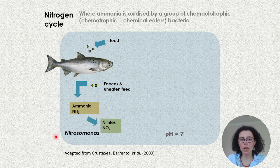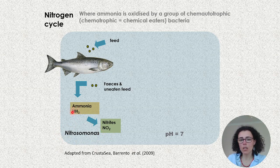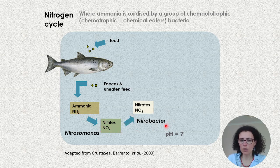You will need a surface in your system that facilitates the growth of the bacteria Nitrosomonas, so they can use the ammonia, add a molecule of oxygen, oxidize the ammonia, and create nitrite (NO2). Then you're going to have another strain of bacteria, Nitrobacter, which adds oxygen to nitrites and converts them into nitrates, which are way less toxic.